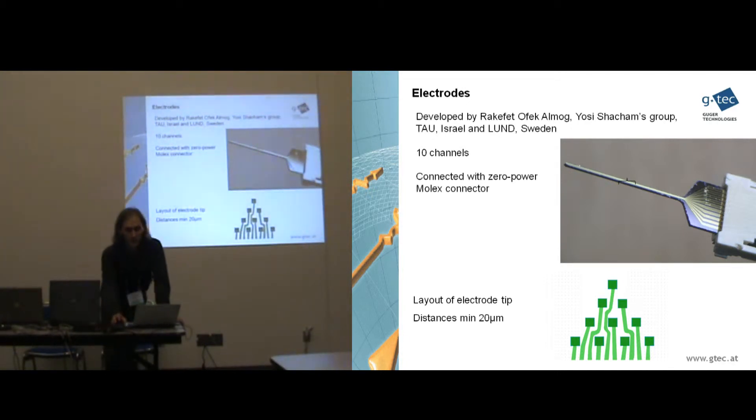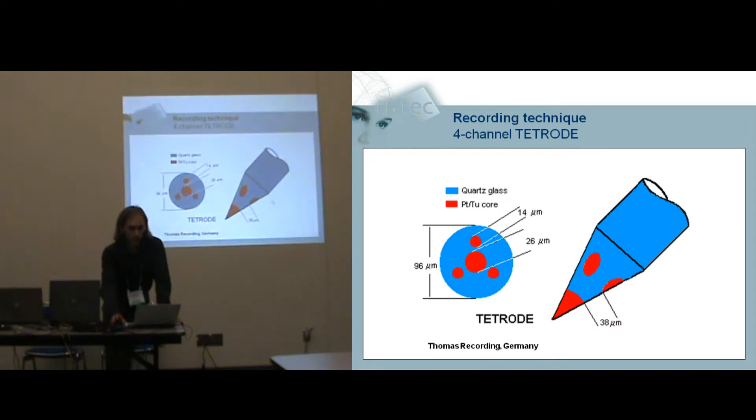And the biggest problem of such small electrodes is of course interfacing. So in this case we use a zero-force Molex connector to interface with the electrode. You can also get the electrode from Thomas Recorder which is shown here. So basically it has four contacts and they are embedded in glass to have a very good isolation. And the advantage of this electrode is that the electrodes are exactly at the defined position. So you know the distance between the electrode pins to each other.